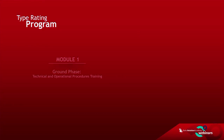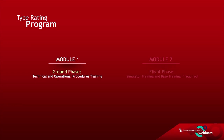The type rating program consists of two modules: the ground phase, which includes technical and operational procedures training, and the flight phase, which includes simulator training and base training if required.